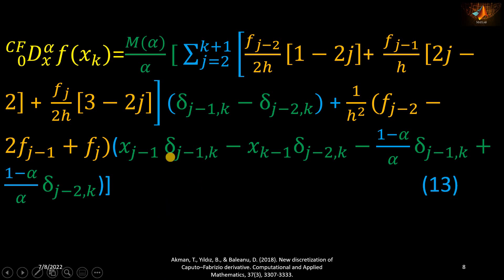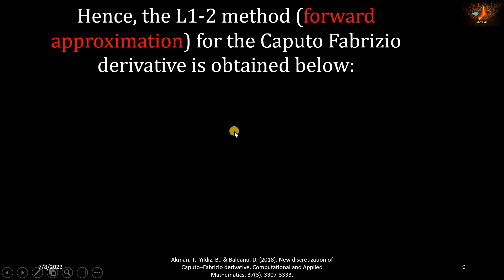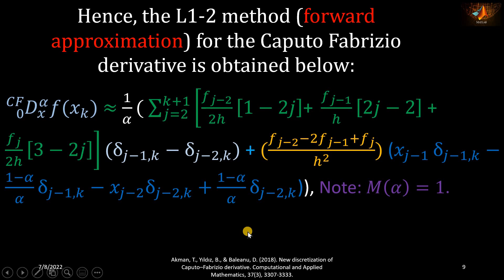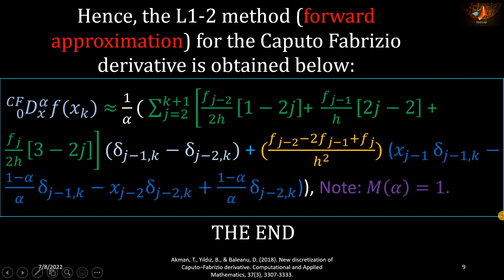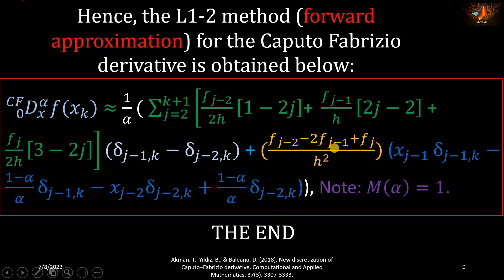The normalization factor M(alpha) equals one, as used in several research papers including the one we are studying. Finally, we have derived our L1-2 method forward approximation for the Caputo-Fabrizio derivative, and the scheme is now on the screen. You should compare these terms with those in the research paper — you will find no difference. In the research paper, this formula was directly given without simplification, making it very complicated to understand how the authors derived it.